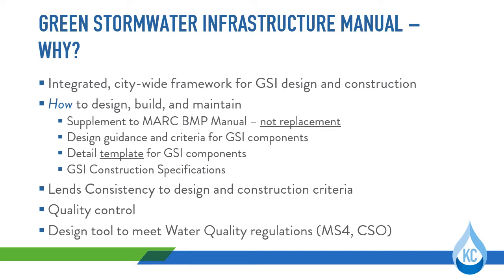Both tools help the project go from a conceptual design to detailed design, construction, establishment, and long-term maintenance. The Green Stormwater Infrastructure Manual lends consistency to the design process and construction criteria, improving quality control on green stormwater infrastructure projects. The manual provides the tools to better aid the city in meeting their water quality regulations, such as the city's MS-4 permit and the combined sewer overflows consent decree requirements.